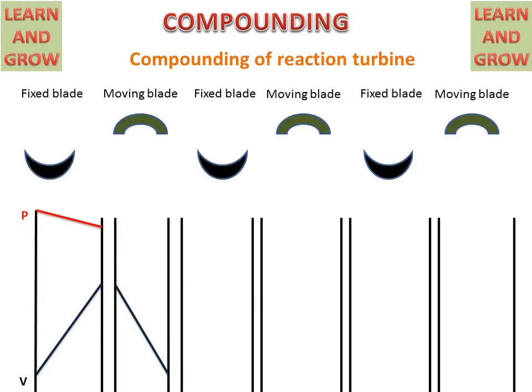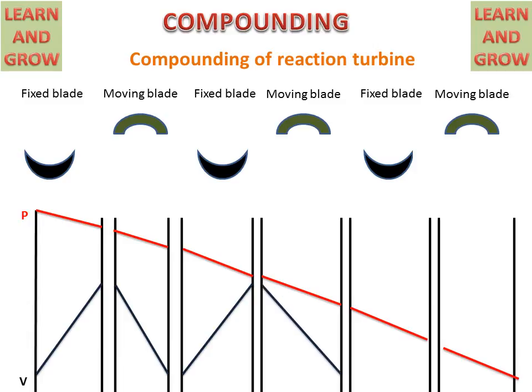Pressure will constantly decrease according to the stages. Velocity increases in the fixed blade and decreases in the moving blade. This is the velocity and pressure graph behavior in the compounding of a reaction turbine.